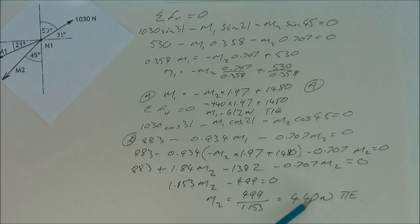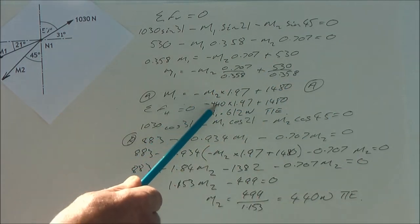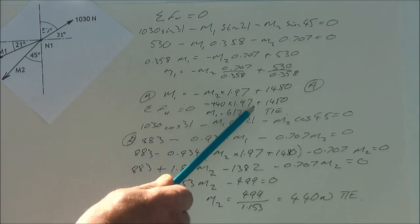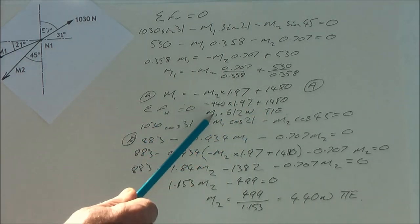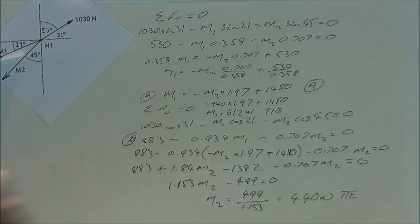I take that number, I drop it into this equation. Minus 440 times 1.97. So I wind up and I rearrange that. I get M1 equals 612 newtons. And it's a tie.